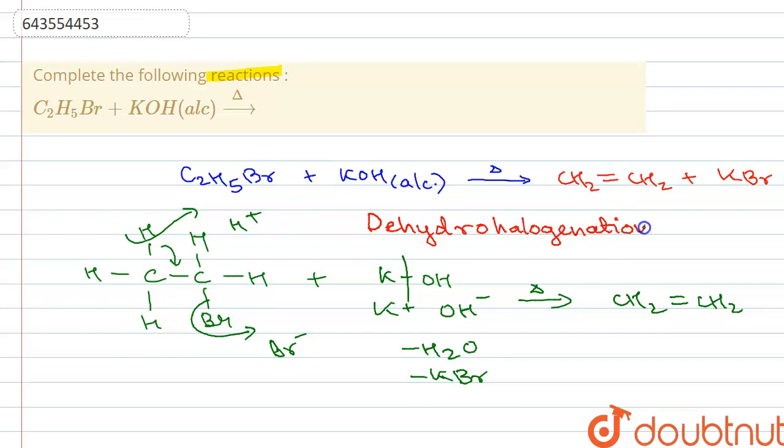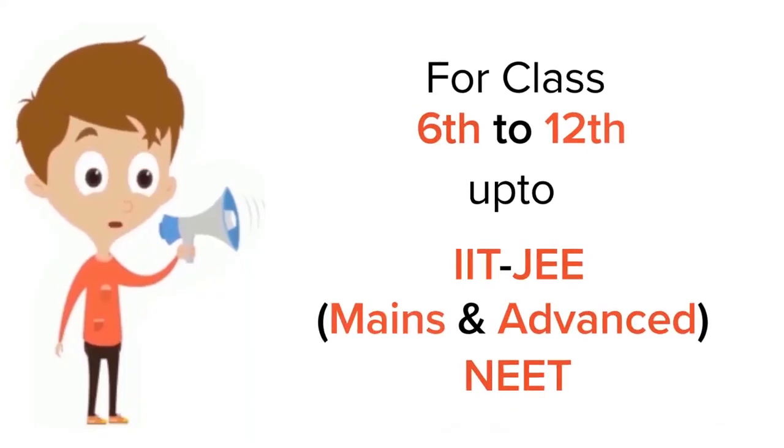As you can see, there is a removal of hydrogen and halogen from the molecule. So as a product we are going to obtain ethene, along with it the byproduct that we are going to obtain is water and KBr, that is potassium bromide. So that was the explanation, thank you.